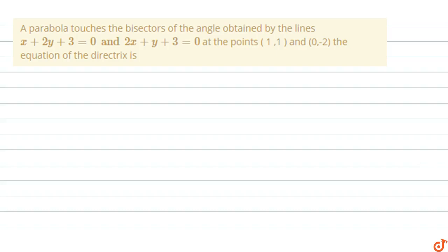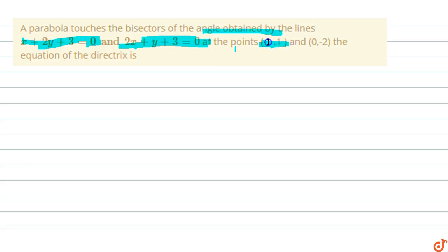In this question, a parabola touches the bisector of the angle obtained by the lines x+2y+3=0 and 2x+y+3=0 at the points (1,1) and (0,-2). The equation of the directrix is to be found.